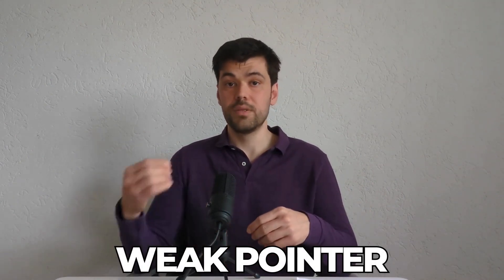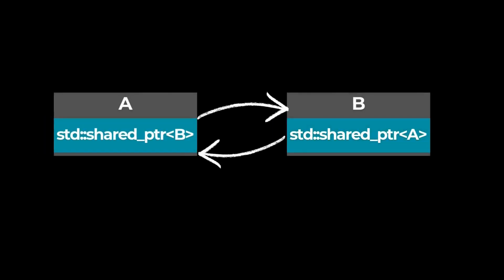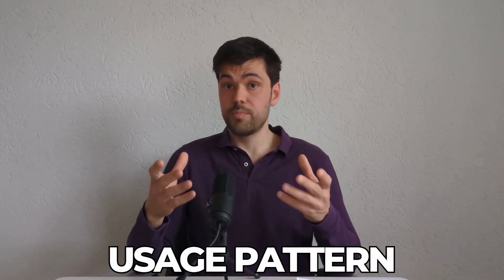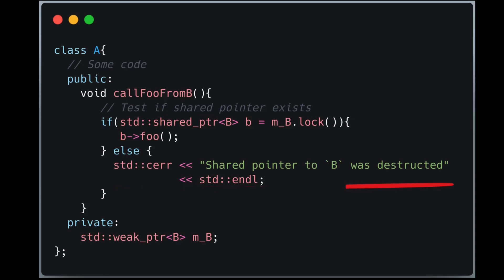To fix that, STL provides weak pointer, which does not increase the reference counter in the shared pointer. Replacing one instance of shared pointer with a weak pointer breaks the circle. Weak pointer acts as a soft link to a shared pointer and provides the method lock to obtain a shared pointer when needed. The general usage pattern: when you need access to the shared pointer, use the method lock to obtain a temporary shared pointer object. If the method returns an invalid shared pointer, it means the underlying shared pointer was destructed. Otherwise, use the obtained shared pointer safely.